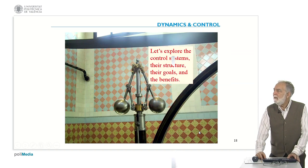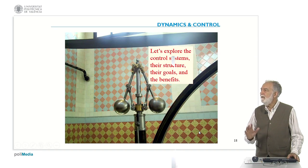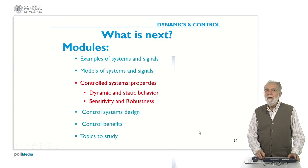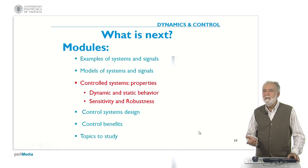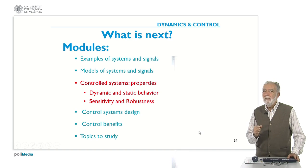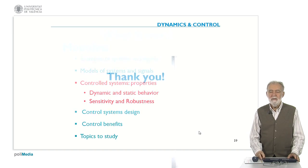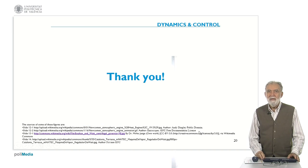So let's explore control systems, their structure, their goals, and the benefits we can get from them. What is next in our course? The properties of control systems. We have seen dynamic systems in general, and now we are going to concentrate on controlled systems, analyzing their behavior — both static and dynamic — and also some other properties like sensitivity and robustness. Thank you for your attention.